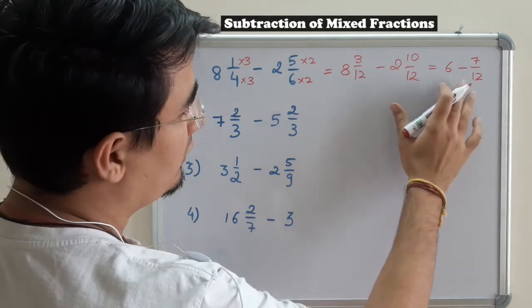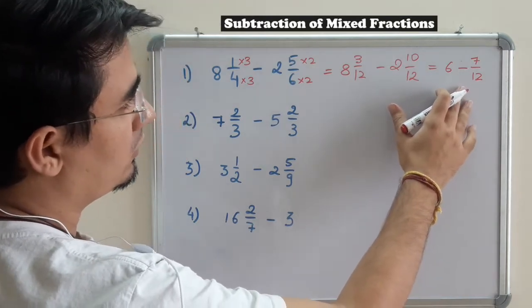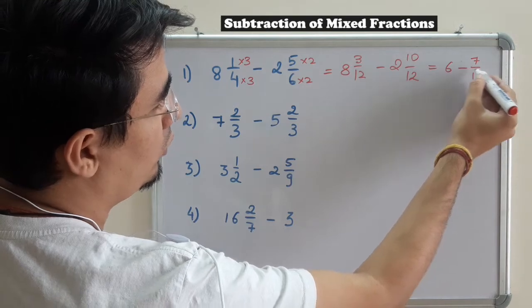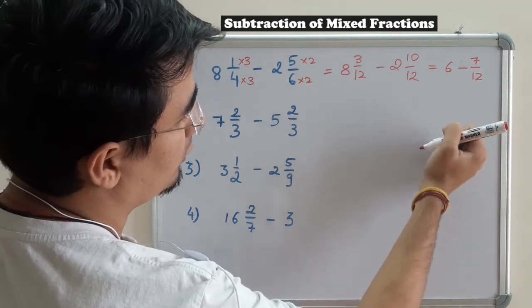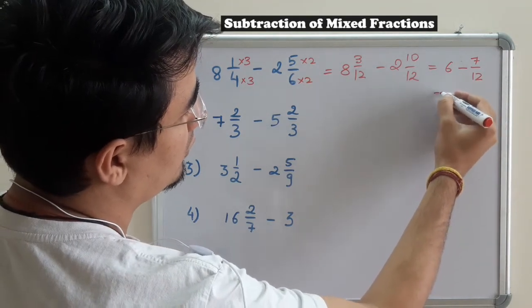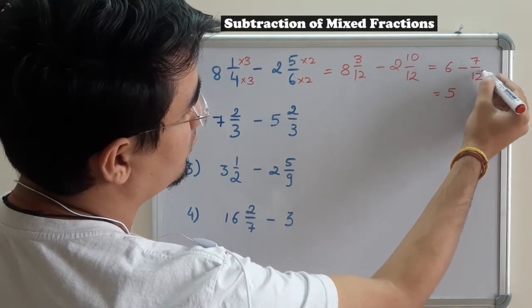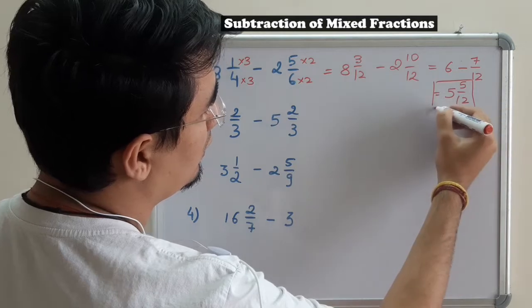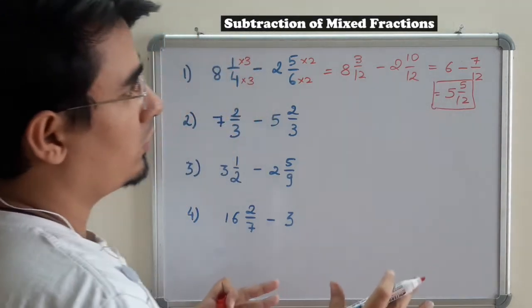Now we've done this kind of question in the previous video. So minus 1 - this is a whole, this is a proper fraction - so it will be minus 1 5/12. Subtract this to get 5/12. This is the shortcut way.